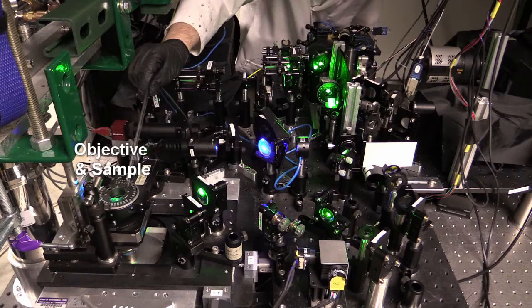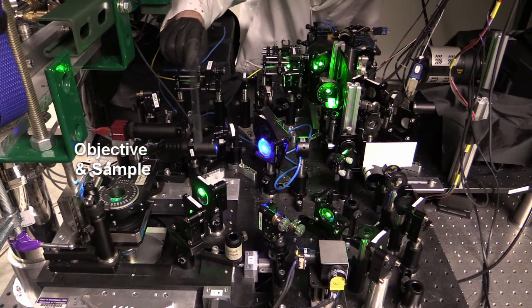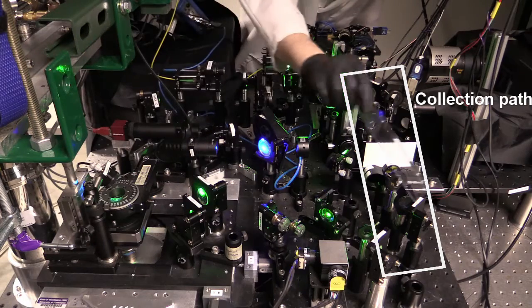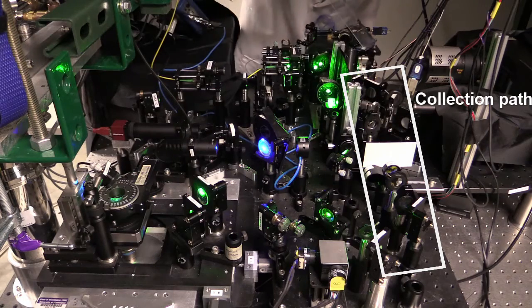Then, light from our sample comes back through the objective, travels back through these mirrors, and heads onto what we call the collection path. On the collection path, we have several different detectors that can measure different properties of the light.